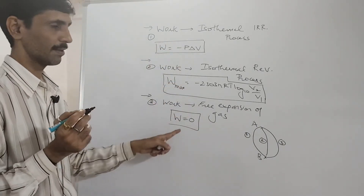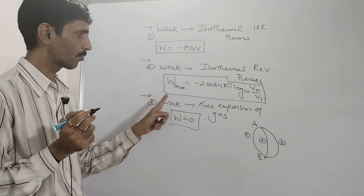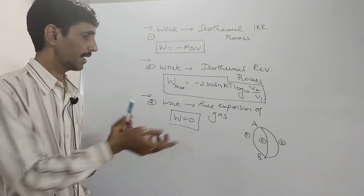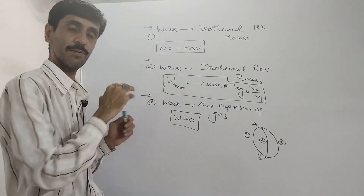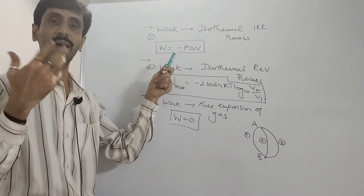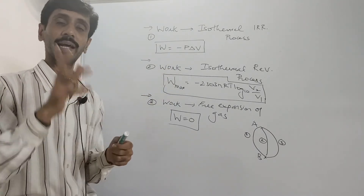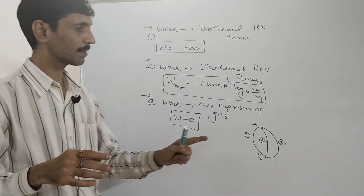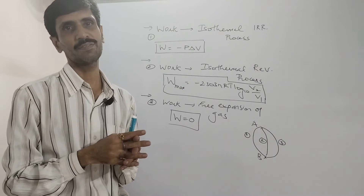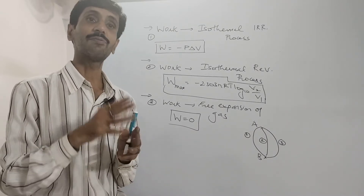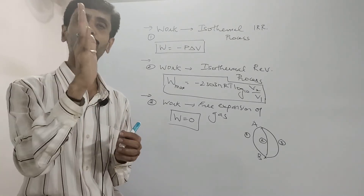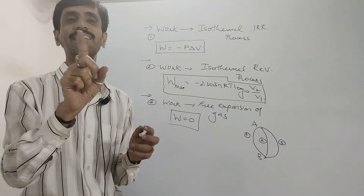If you check the three expressions, all three are about work. You can see the right-hand side — the values are different. In path three W is zero, in path two W max cannot be zero, and in path one it is not necessarily zero either. So in spite of the fact that the initial state and the final state is the same, the values of work are different.